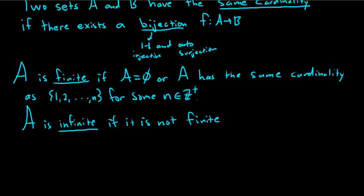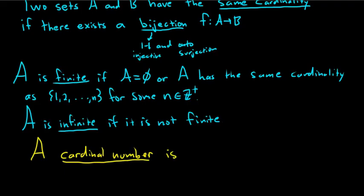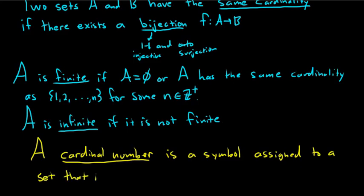A cardinal number is a symbol assigned to a set that indicates the cardinality. If the set is finite, we just use an integer. If it's not finite, there are other symbols we can use.